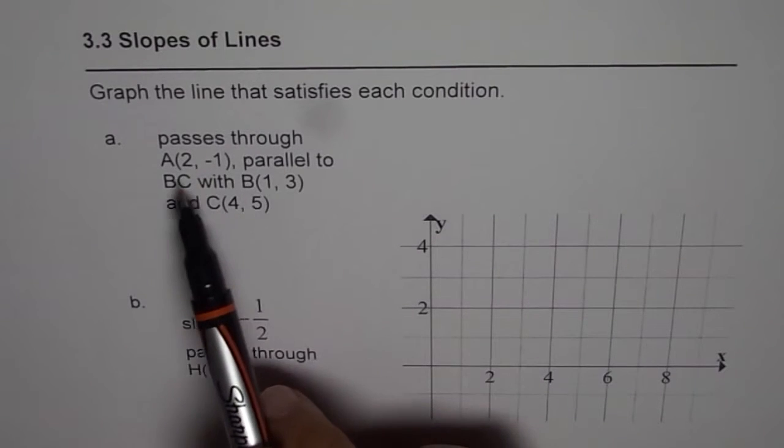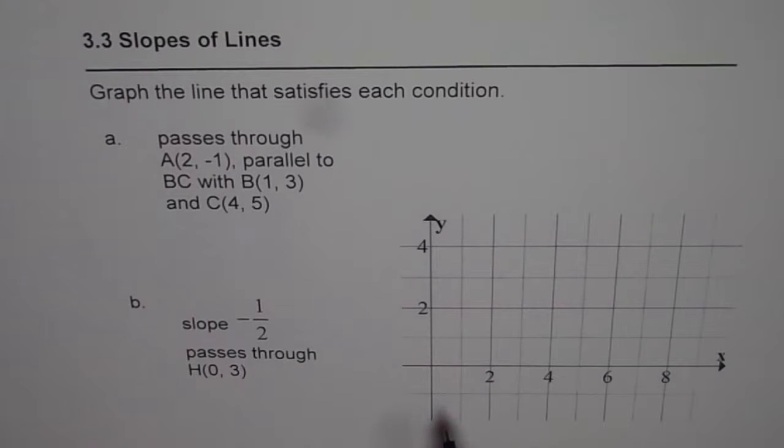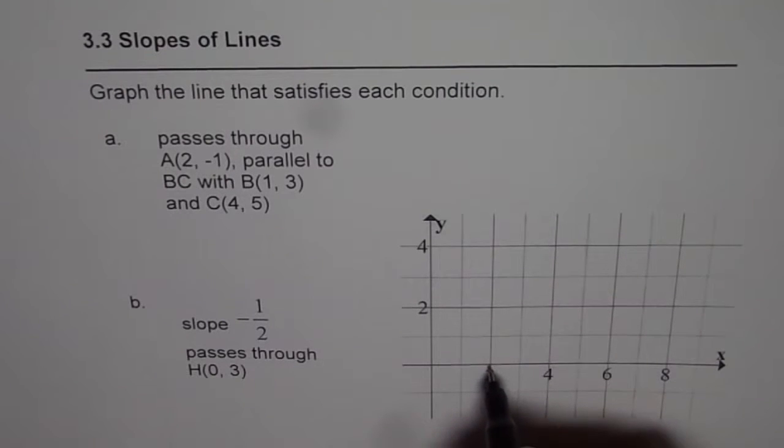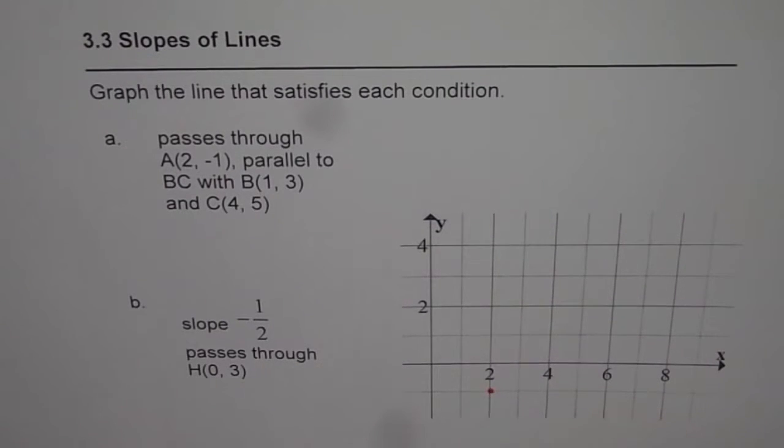Part A passes through point A, which is (2, -1). This is point A for us. Let me write down A here.